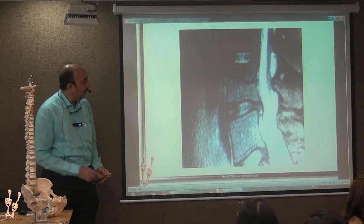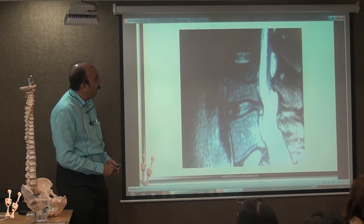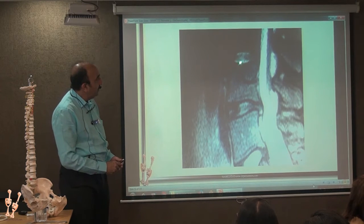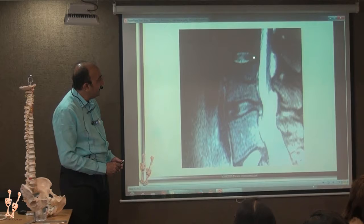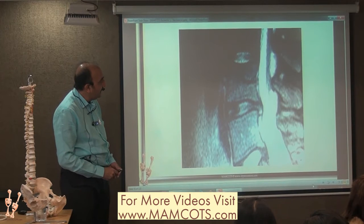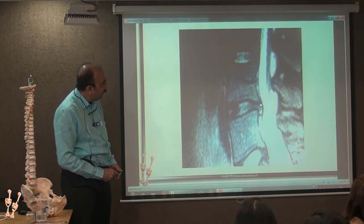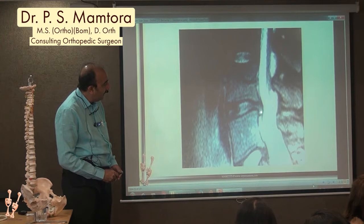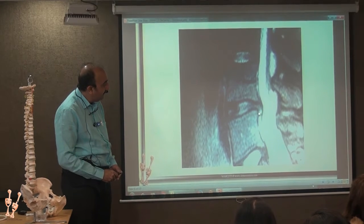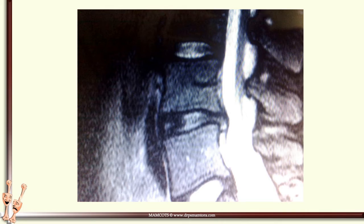Now this is that MRI. You can see a normal disc with nucleus here, annulus here. Here you can see the annular tear and you can see the nucleus travelling through the tear and causing an extrusion with a little bit of inferior migration.